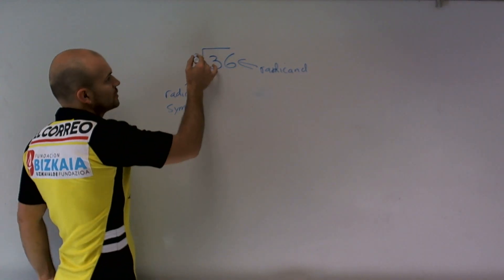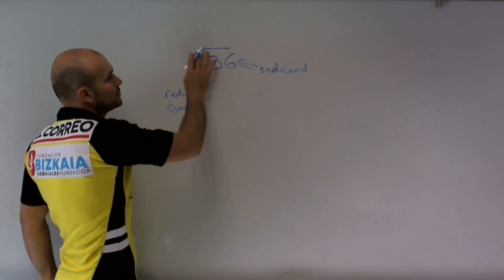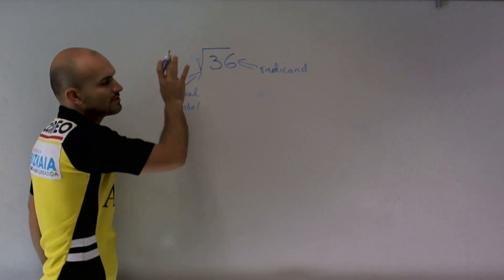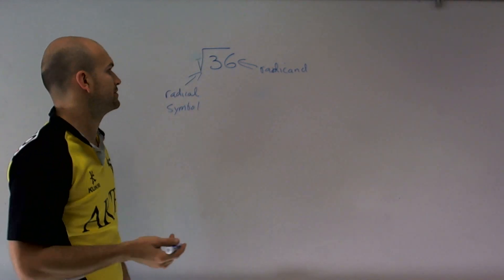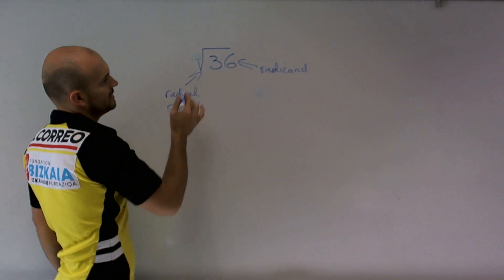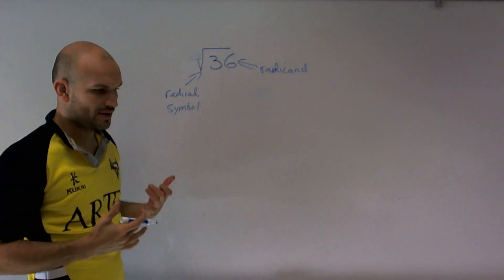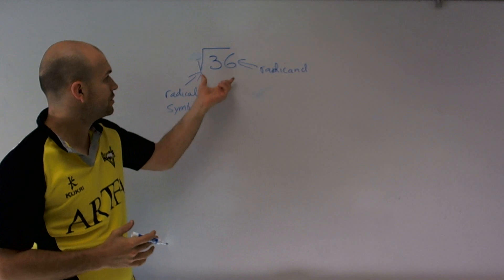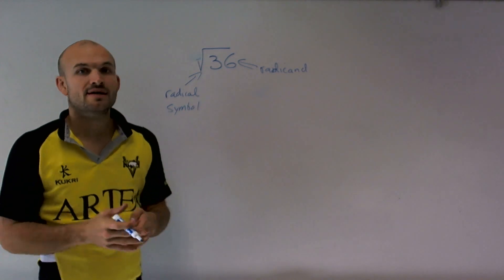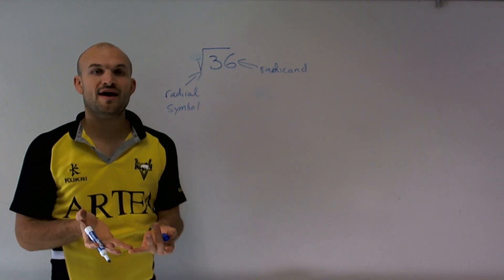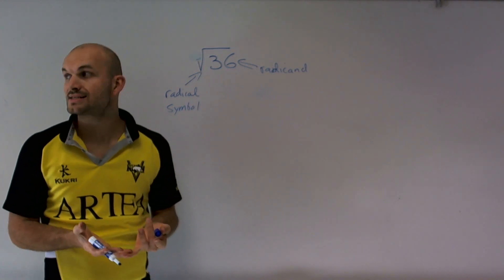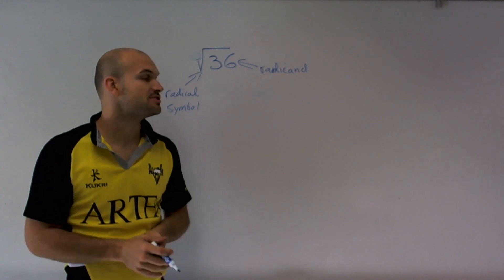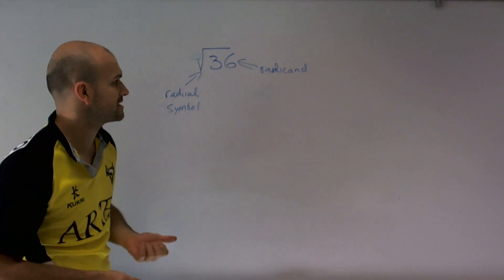There are other radical symbols we can use, like the cube root or the fourth root. But for right now, we're just going to deal with the square root. So when I'm taking the square root of 36, that means: what factor of 36 multiplied by itself is going to give me 36?